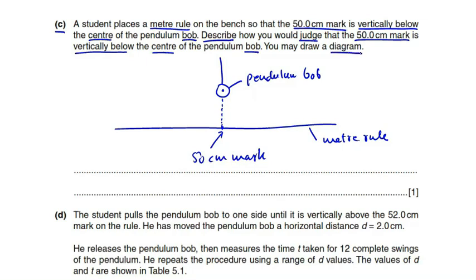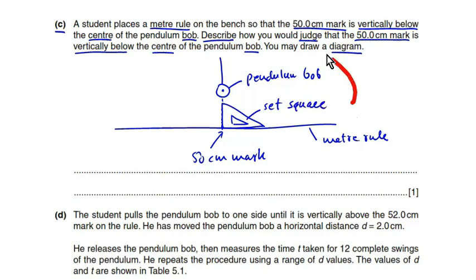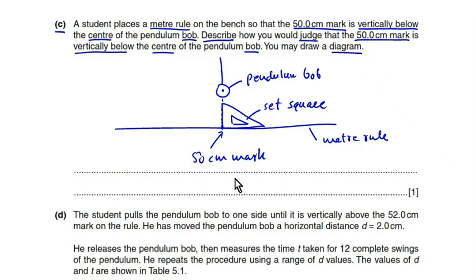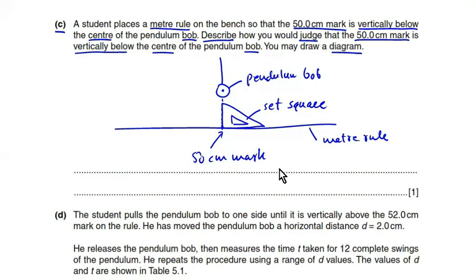Describe how you ensure that the 50 centimeter mark is vertically below the center of the pendulum bob. You may draw a diagram. To check this, the student can use a set square — place the set square on the meter rule so that the vertical edge of the set square is on the 50 centimeter mark and also right below the bottom of the bob. This diagram will earn you full marks. Remember: when you draw a diagram in the ATP paper, label each and everything in your diagram, otherwise you may lose a mark.